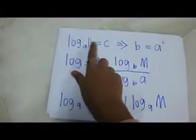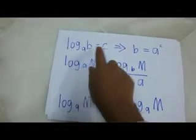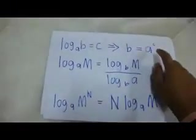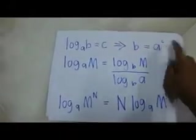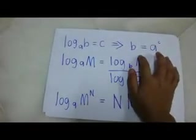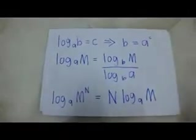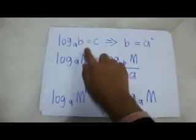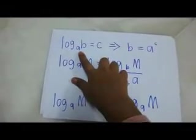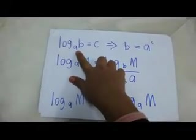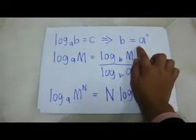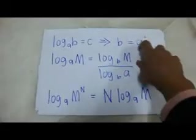First, log base A of B is equal to C is equivalent to B equals A to the power of C. Some might get confused with this law but the only thing that you need to remember is base will always be the base. Just like this example, A for the logarithm form A is the base and it is the same for indices form that A will be the base too.